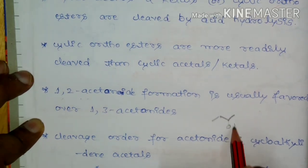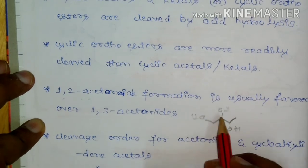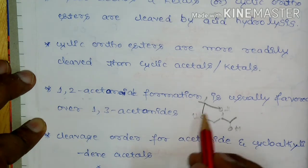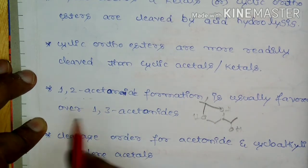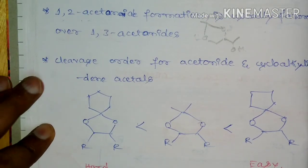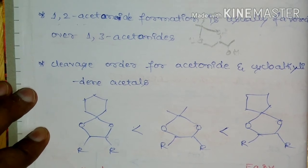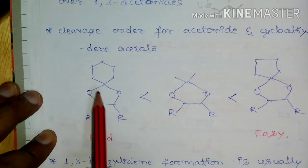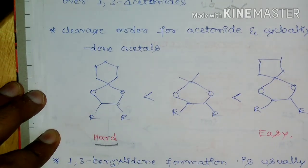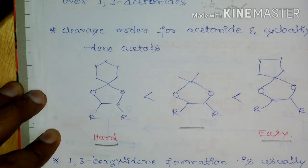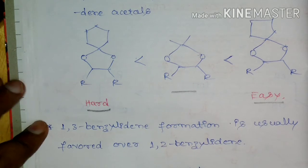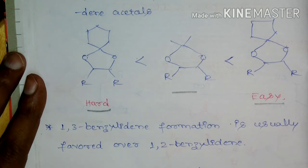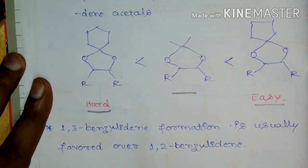Cyclic orthoesters are more readily cleaved than cyclic acetals or ketals. Also, 1,2-acetonide formation is usually favored over 1,3-acetonide — meaning if a triol is treated with acetone or dimethoxypropane, the 1,2-acetonide will form preferentially. Regarding the cleavage order for acetonides and cycloalkylidene acetals: the cyclohexanone-derived acetal is hardest to remove by acid, simple acetonide is intermediate, and cyclopentylidene acetal is easiest to remove.